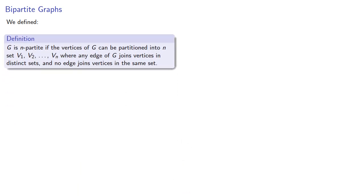In the previous lecture we defined G is n-partite if the vertices of G can be partitioned into n sets where any edge of G joins vertices in distinct sets and no edge joins vertices in the same set. In the special case where n equals 2 we say the graph is bipartite and sometimes we call it a bigraph.